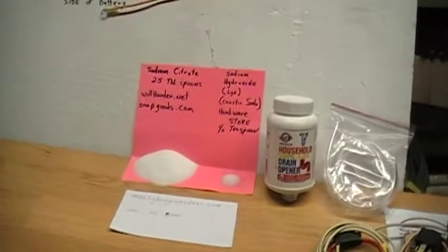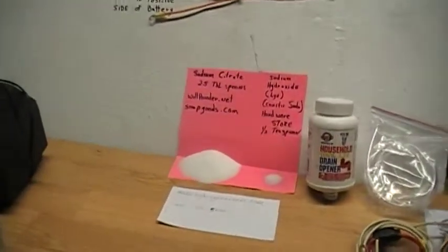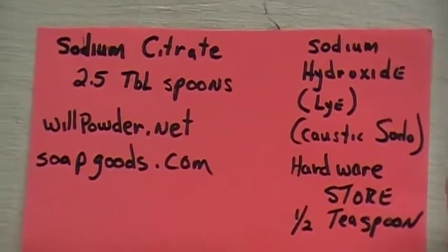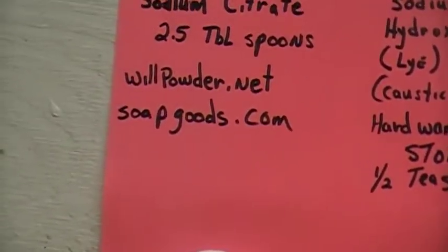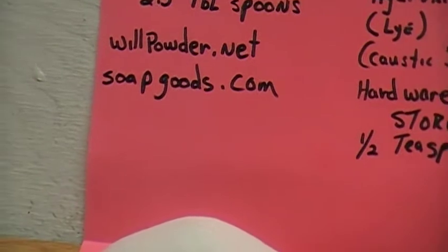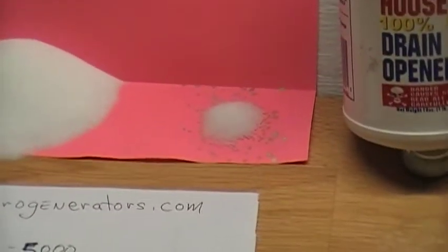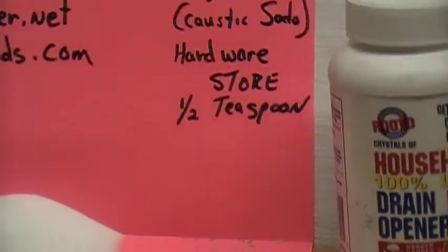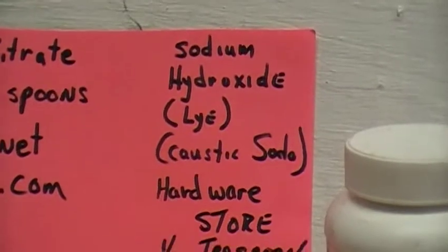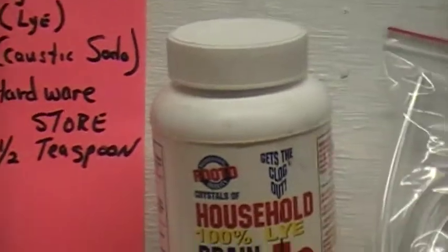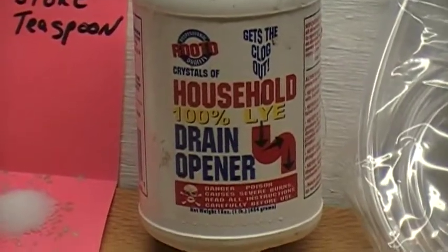Now the electrolyte comes in two kinds. You have the sodium citrate which is right there. It takes two and a half tablespoons. You can get it from willpowder.net or soapgoods.com, which soapgoods.com is cheaper. It takes about two and a half tablespoons.